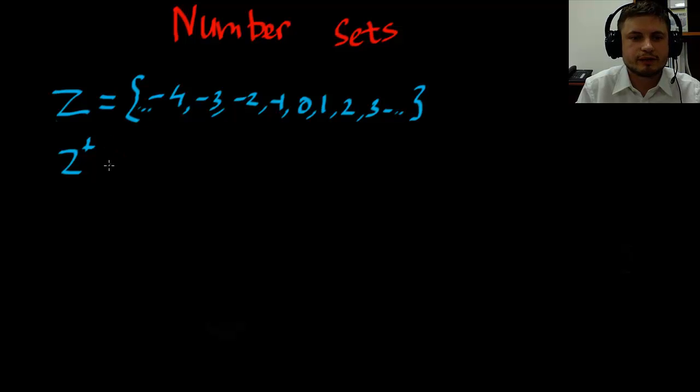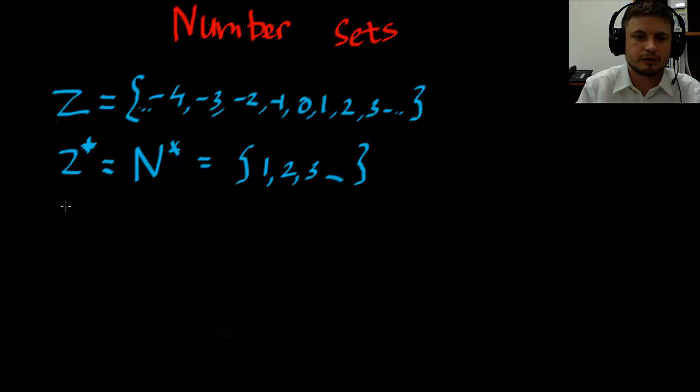Now IB book also has something called Z plus which is essentially only the positive integers. And it's actually the same as the counting numbers. So essentially it's everything from 1 to 2, 3 and so on. Everything excluding 0 and the negative integers. However Z minus is only the negative integers. So it's things like minus 4, minus 3, minus 2, minus 1.